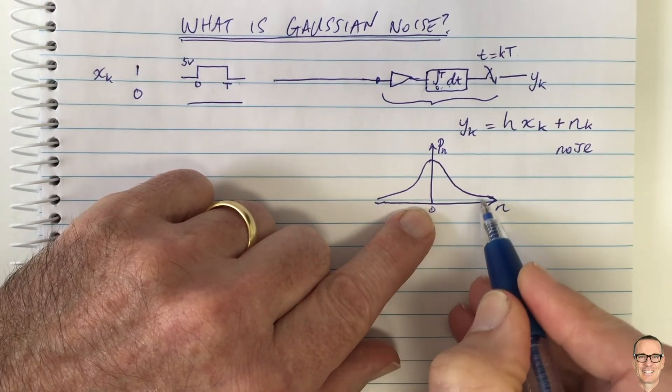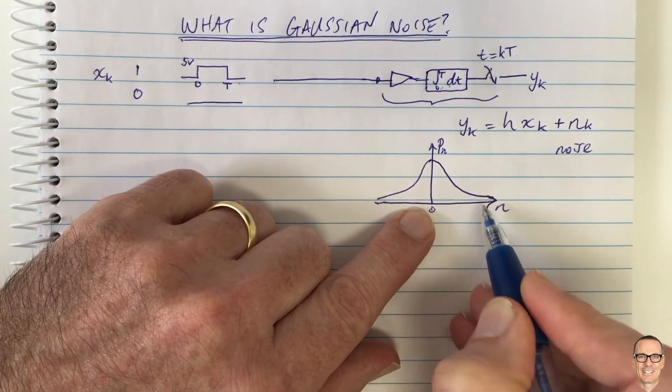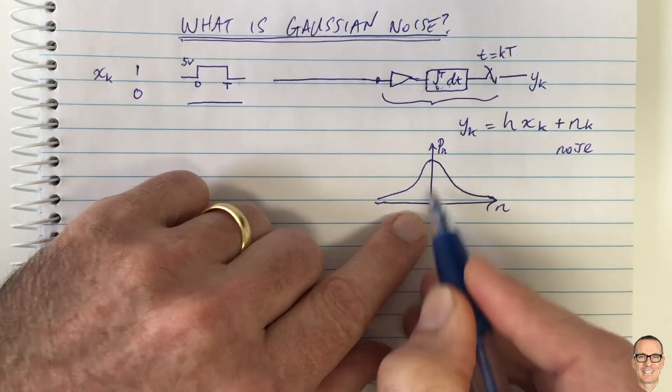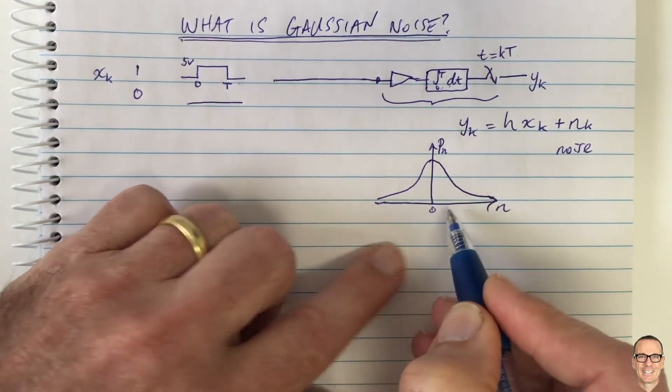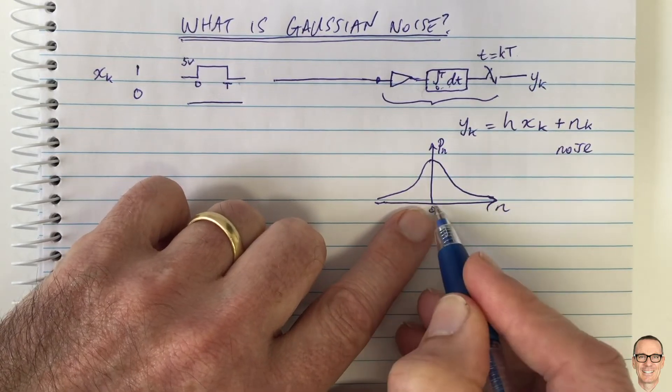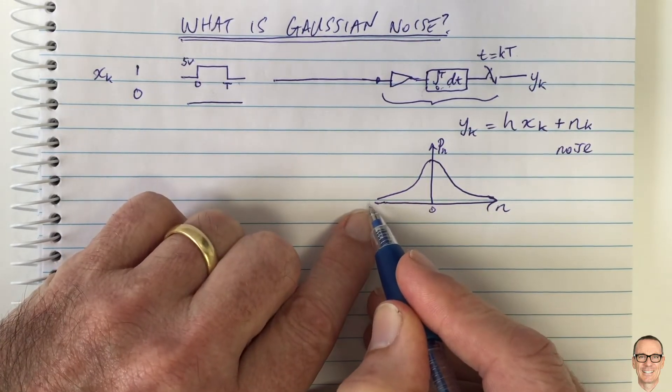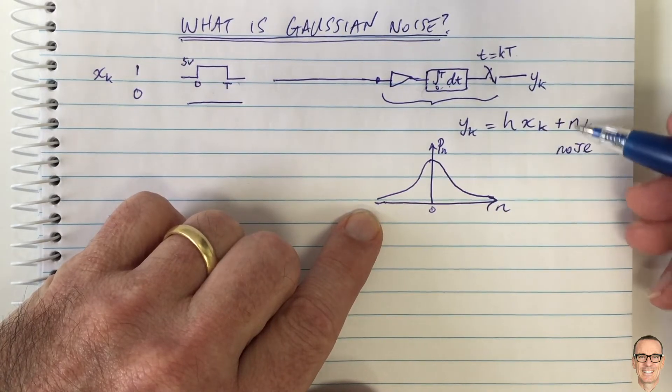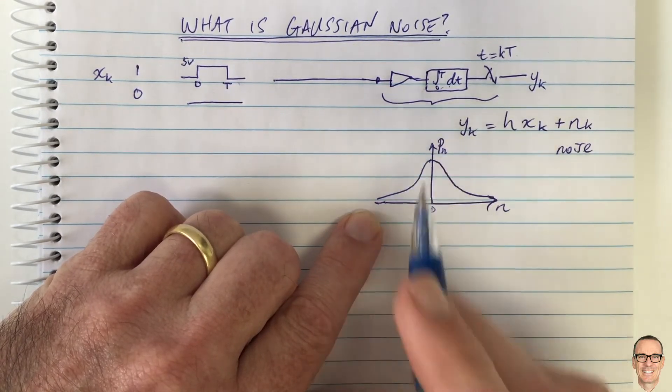what the bell curve says is it tells you that the probability of getting a big value of n, so there's numbers out here, these are big values of n, the probability of getting that is small, and the probability of getting a small value of n is high. Of course, also, it says that it's equally likely that you get a positive noise effect as it is a negative noise effect.